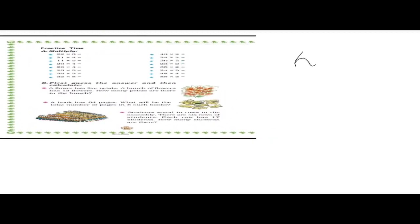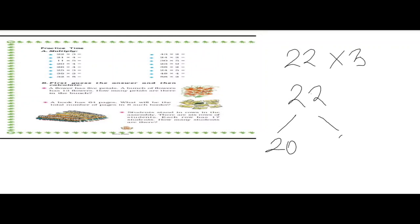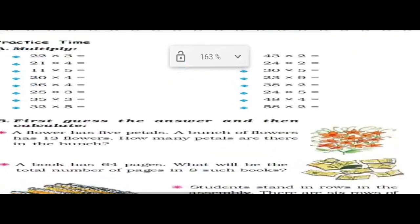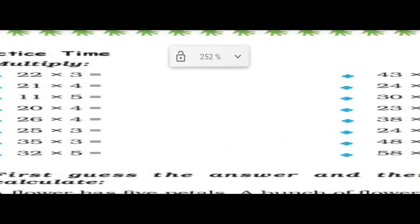22 into 3 is there. What we will do is divide 22 into 20 plus 2, and we will multiply both parts with 3. So 20 times 3 is 60, plus 2 times 3 is 6. We will get the answer 69. So in this manner you will do this one — 22 times 3 is 69.